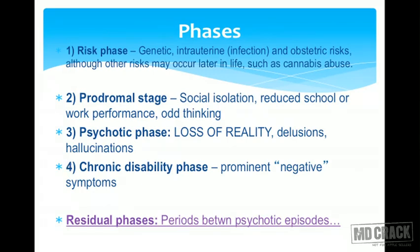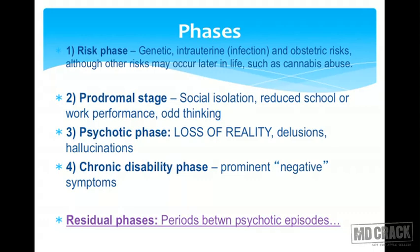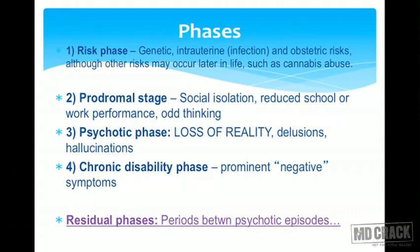Moving on to the phases of schizophrenia: the first is the risk phase, involving genetic factors and intrauterine infection. The second is the prodromal stage, with social isolation, reduced school or work performance, and odd thinking. The third is the psychotic phase, where there is loss of reality, delusions, and hallucinations. The fourth is the chronic disability phase, with prominent negative symptoms.